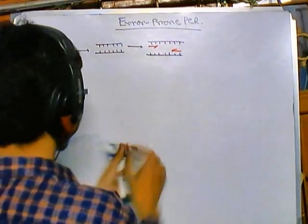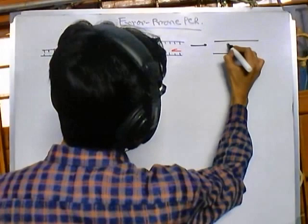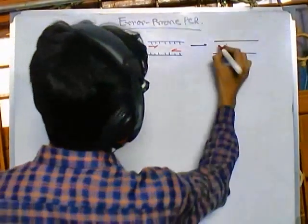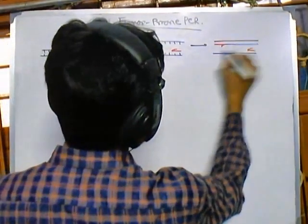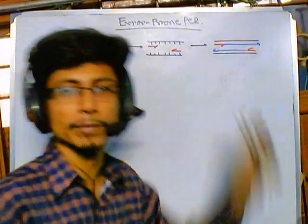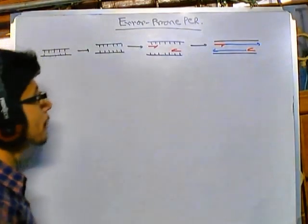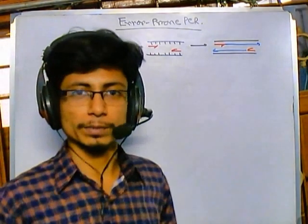After addition of forward and reverse primers, the final step is the polymerization event. Synthesis of the rest of the DNA is conducted — that is how we generate two different templates from one. This is the polymerase chain reaction, but in this video we are going to focus on error-prone PCR.